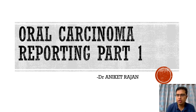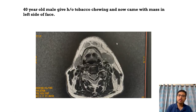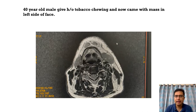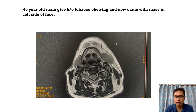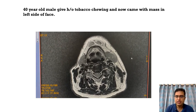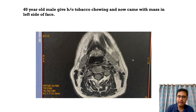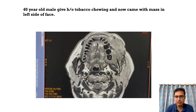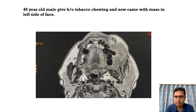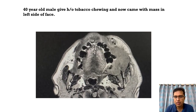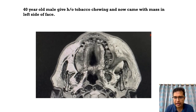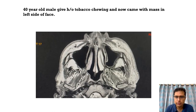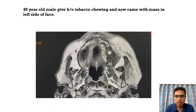Starting with our case today: a 40-year-old male who came with a large mass in the left side of the face with a history of chewing tobacco. This is the MRI done for this patient — axial T2-weighted images scrolling from cranial to caudal direction. This is the maxilla, these are the muscles of the tongue, and here we can see a T2 hyperintense mass epicentered at the retromolar trigone and the posterior alveolar ridge.